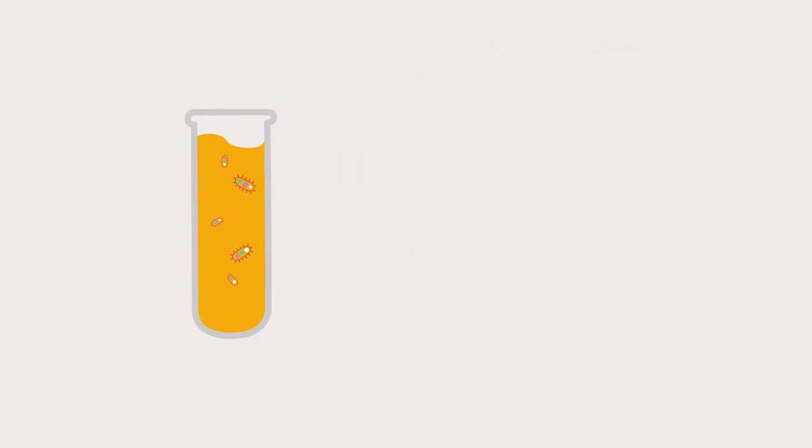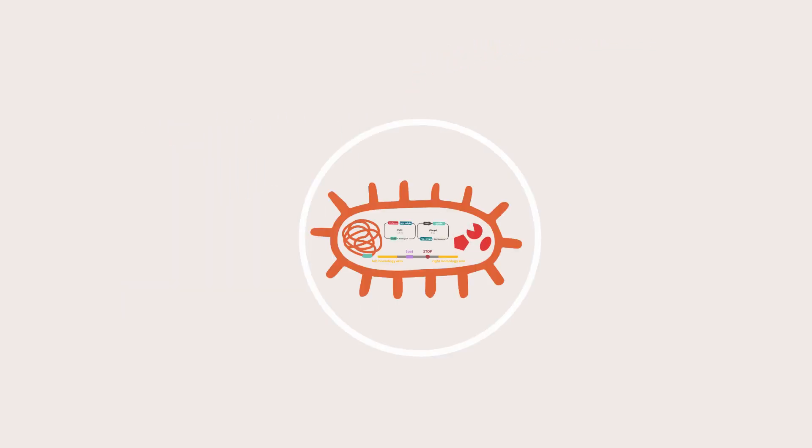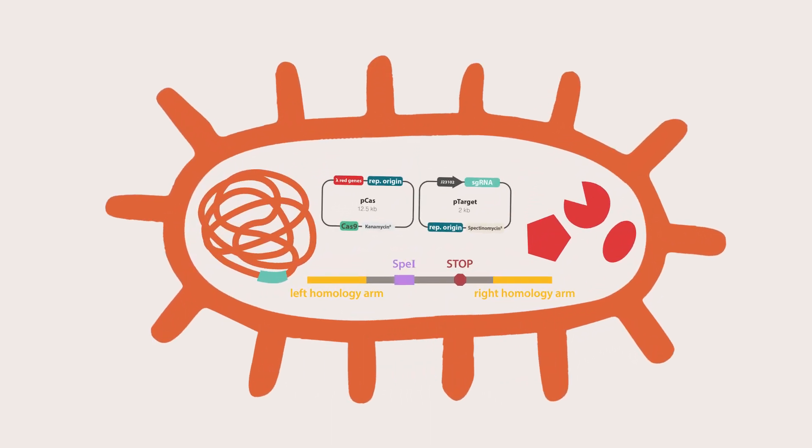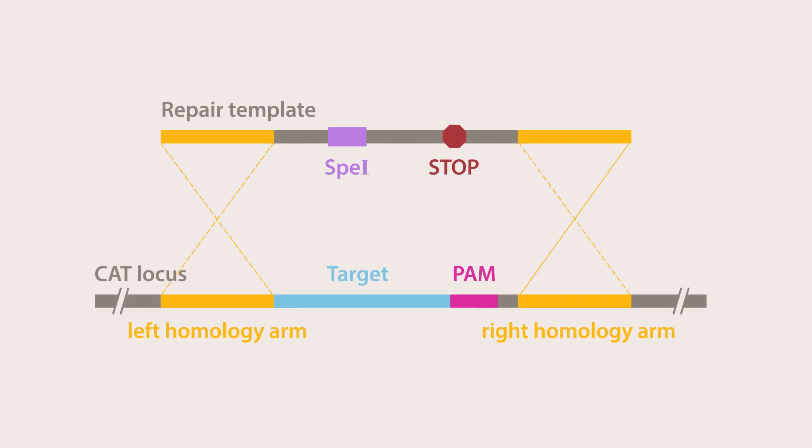Once all the components are present, the lambda red proteins enable the recombination of the repair template DNA with the bacterial genome. The repair template is inserted, causing the CAT gene and PAM sequence to be disrupted.